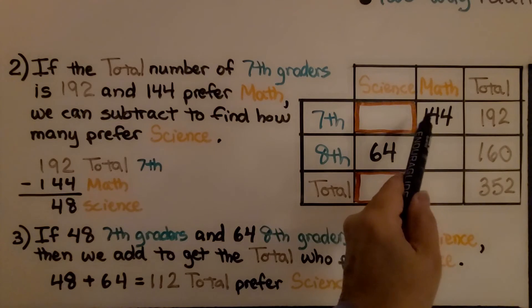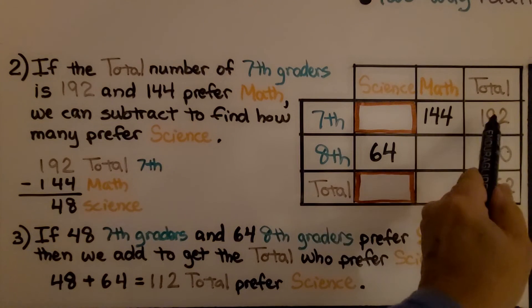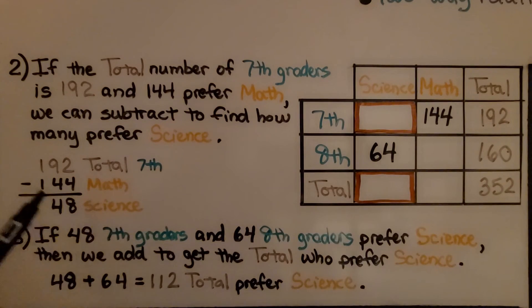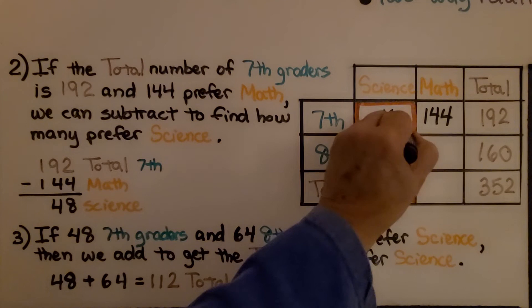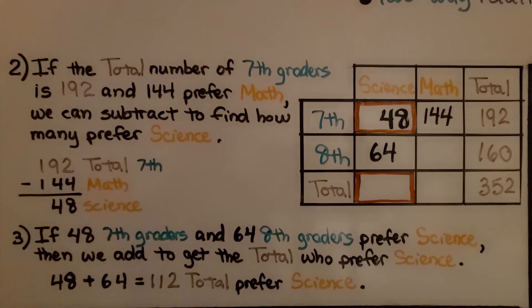we can subtract to find how many prefer science. We do 192 minus 144 and we find out that 48 7th graders prefer science. Now we've got that cell filled out.